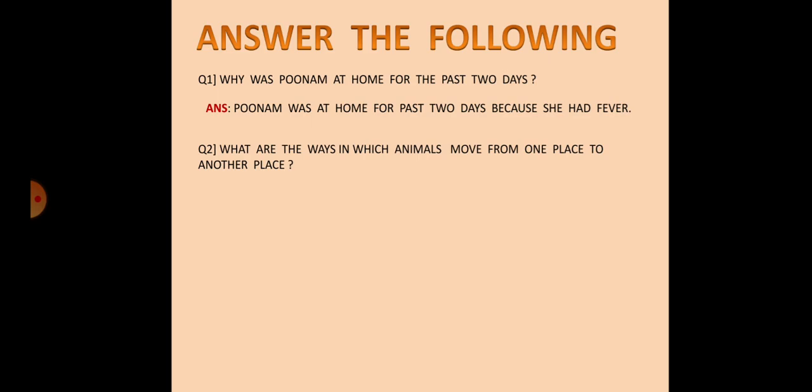What are the ways in which animals move from one place to another place? We have discussed a lot about this. Animals can walk or run, crawl or slither, fly or glide and swim to move from one place to another place.